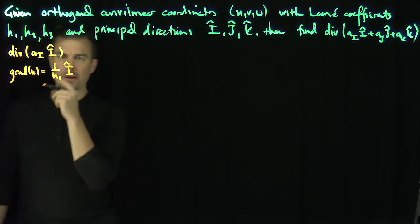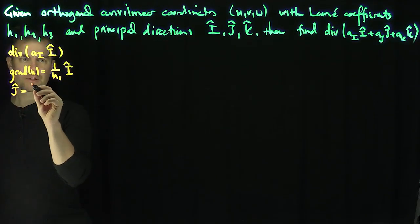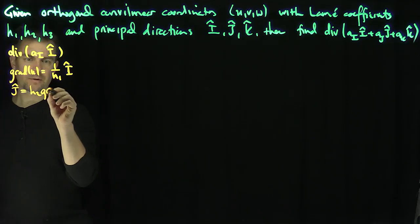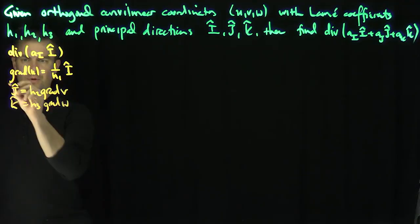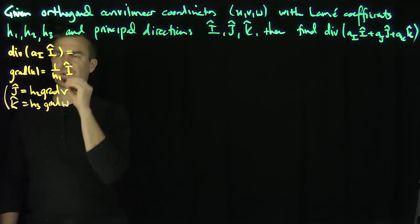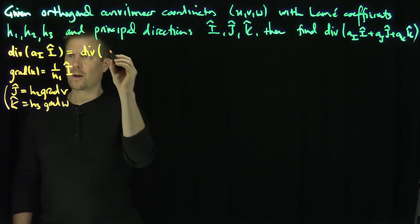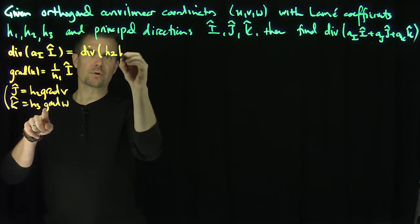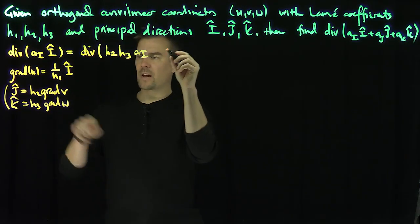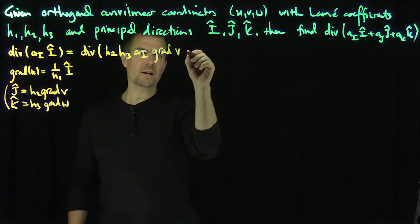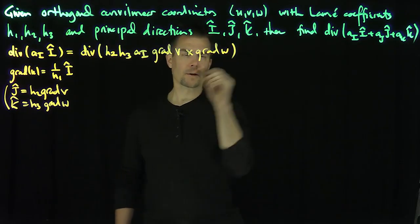Similarly, ĵ = h2 ∇v and k̂ = h3 ∇w. Using those two relationships, we can write the divergence of a_i î as the divergence of h2 h3 a_i times (∇v × ∇w).